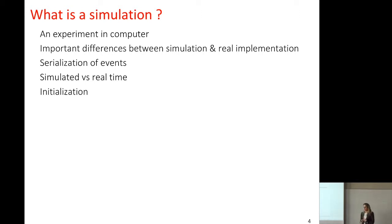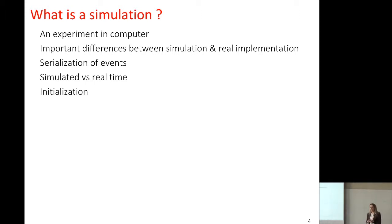To better understand simulated time, assume that in the wireless sensor network, sensors send information to the central database at most every five seconds when they observe a big difference in their readings. Two sensors might observe a difference in their readings very close in time — for example, less than 10 microseconds. Our code will not be able to run in 10 microseconds of real time, but the simulated time will still be 10 microseconds.